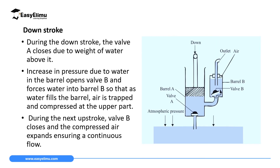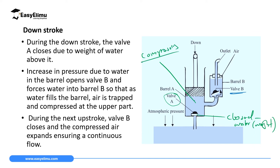During downstroke, the water above valve A forces it to close due to the weight of the water above it. You are now compressing the water in barrel A. This water is under very high pressure. Since valve A has been closed by the weight of the water, atmospheric pressure will not help here. The water inside is at very high pressure while valve A is closed.